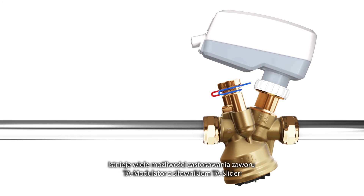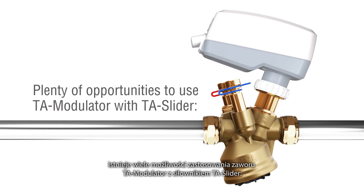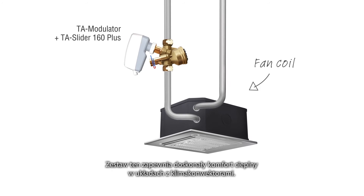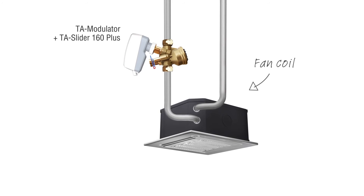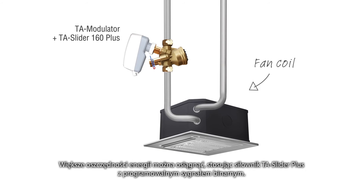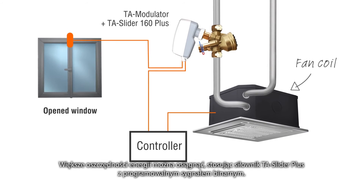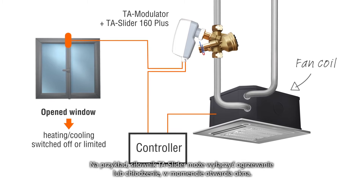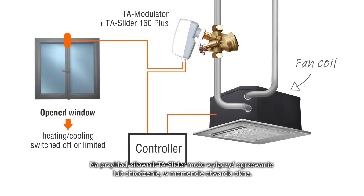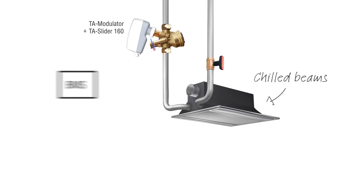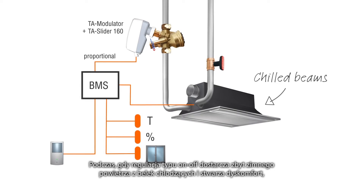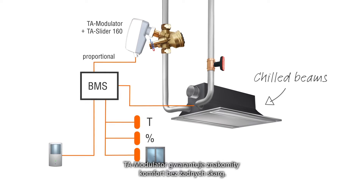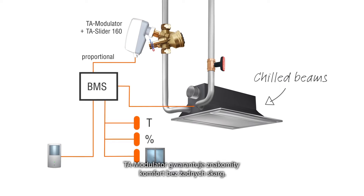There are plenty of opportunities to use TA Modulator with TA Slider. Both will deliver perfect temperature comfort in systems with fan coils. Higher energy savings can be achieved with TA Slider Plus, with programmable binary input — for example, TA Slider can switch off heating or cooling when the window is open. While on-off control delivers air that is too cold from chill beams and creates discomfort, TA Modulator guarantees perfect temperature comfort without complaints.